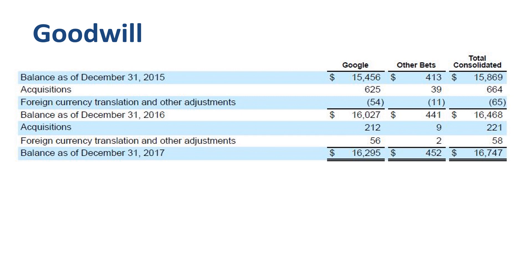Goodwill — one of my favorite items to review on a balance sheet, as it tells a lot about the way the company has grown over the years. A high goodwill balance is an indication of significant acquisition activity in the company's history. Goodwill is the excess of the purchase price paid for acquired firms over the fair value of its separately identifiable net assets. Goodwill can be a major risk item if the performance of the acquired company does not live up to expectations — an impairment might then be needed. In the case of Alphabet Inc, the goodwill balance at year-end 2017 is $16.7 billion, up only relatively slightly compared to prior years. Yes, a few hundred million dollars qualifies as slight in the context of Alphabet Inc.